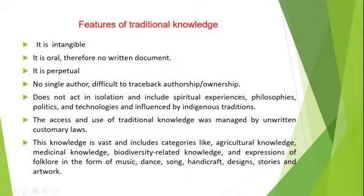What are the features of traditional knowledge? The first and foremost, TK is intangible. Intangible means it is not physical, it is abstract. The second feature, it is oral and therefore there is no written document. It is perpetual, meaning the knowledge is continuous, the development is continuous, it passes on from one generation to another. The fourth feature, you cannot trace back or attribute the development of this knowledge to a single author or owner.